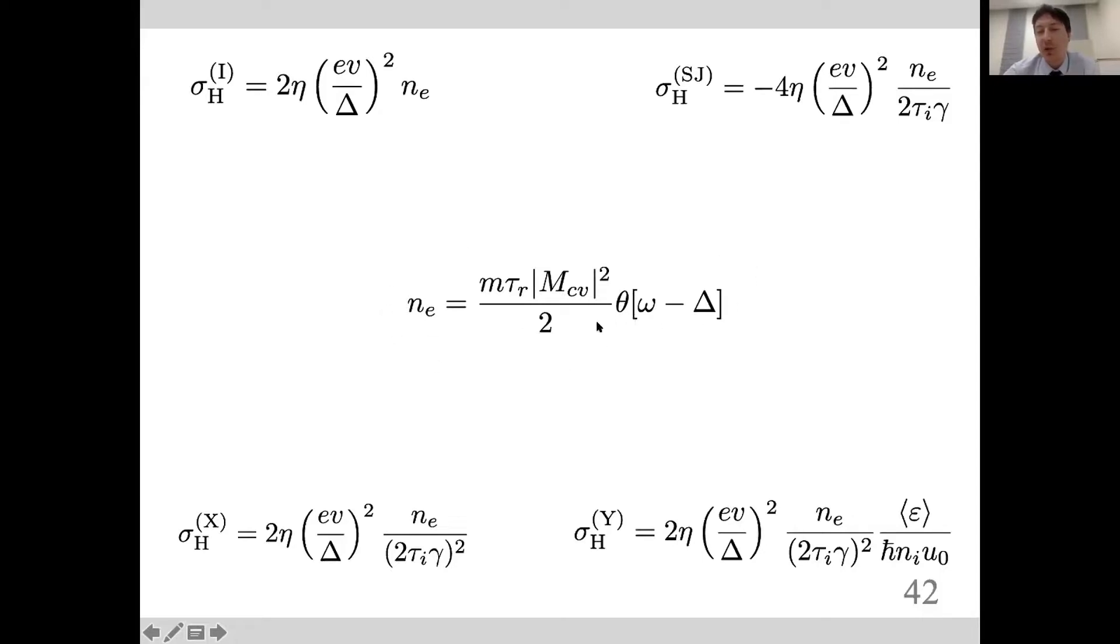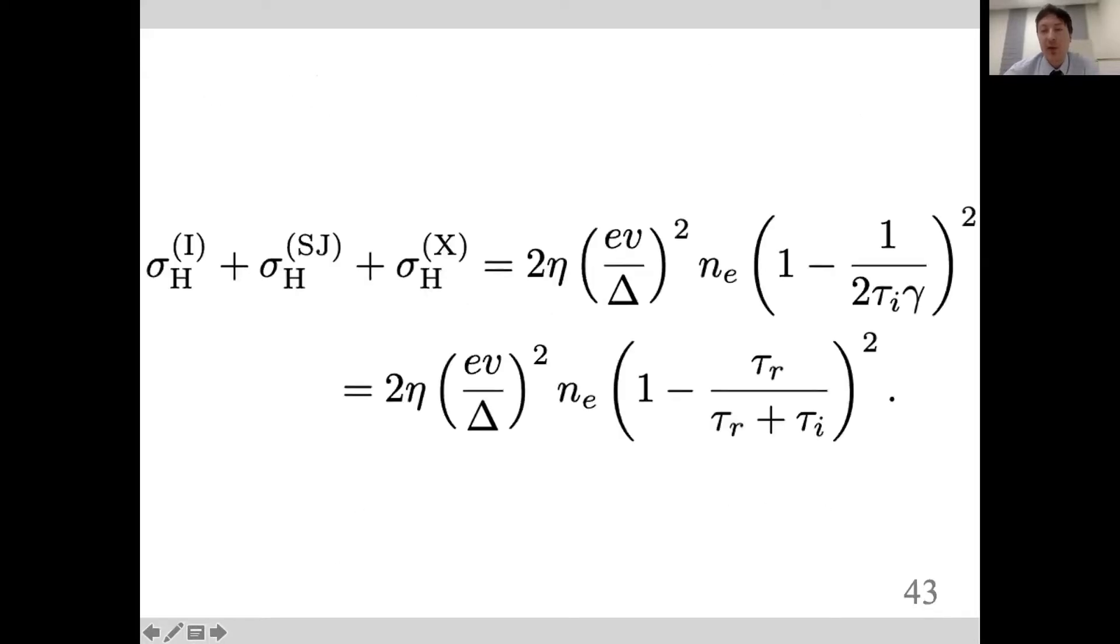This n_e comes actually in all the formulas. The interesting thing here is if you sum up three of the contributions, they nearly cancel each other out, especially in the realistic regime where the interband recombination is bigger than the scattering on impurity time. Then in this term, we get nearly zero, and three terms cancel out.